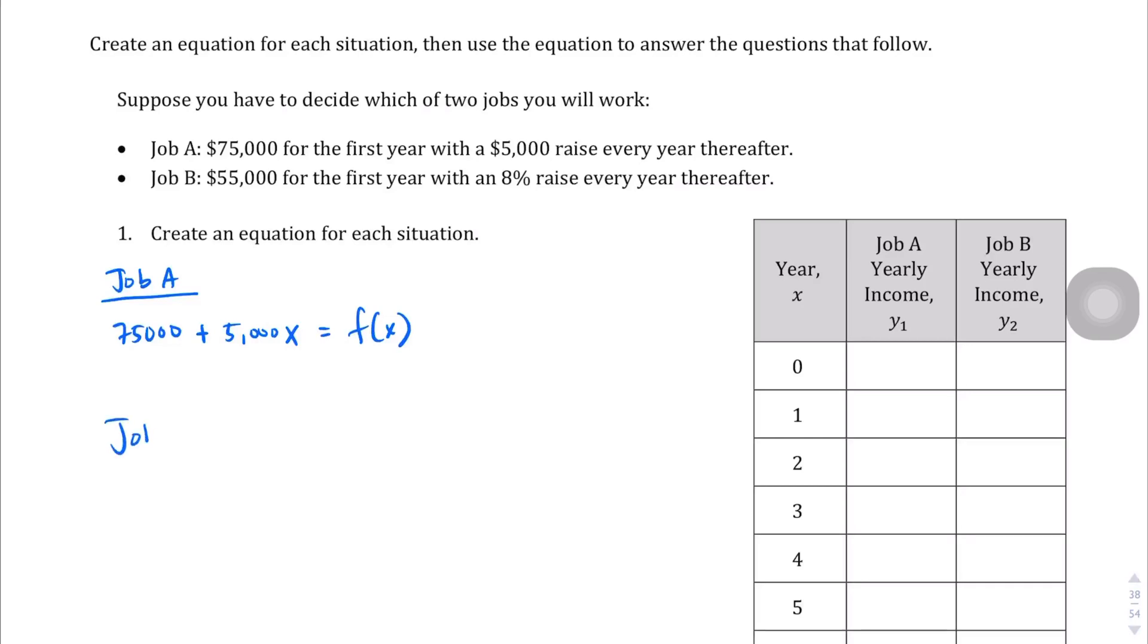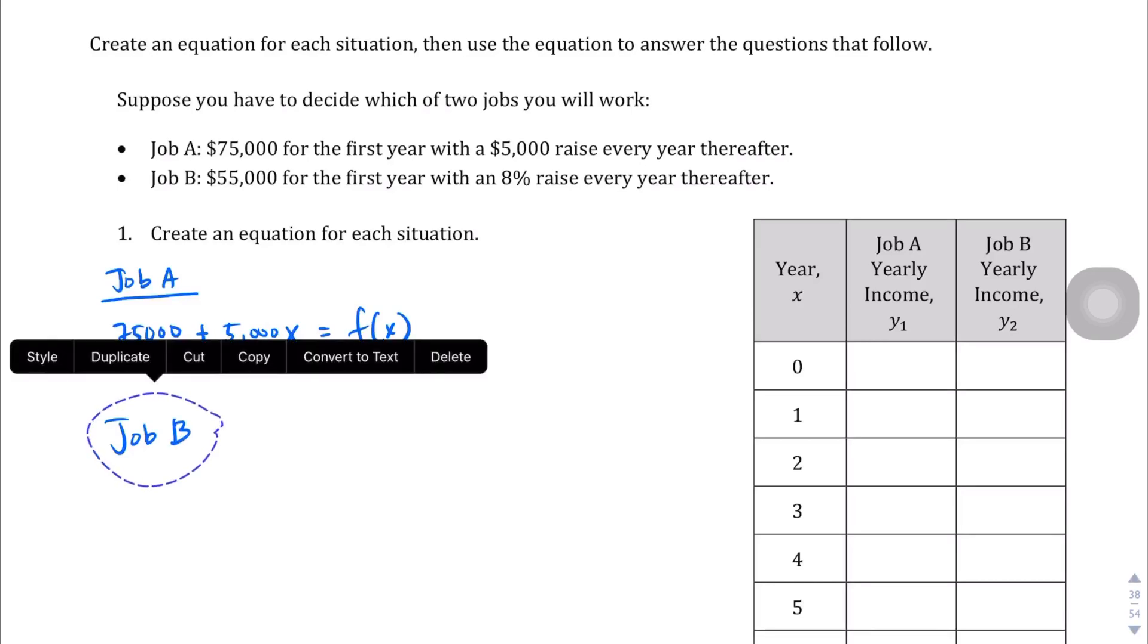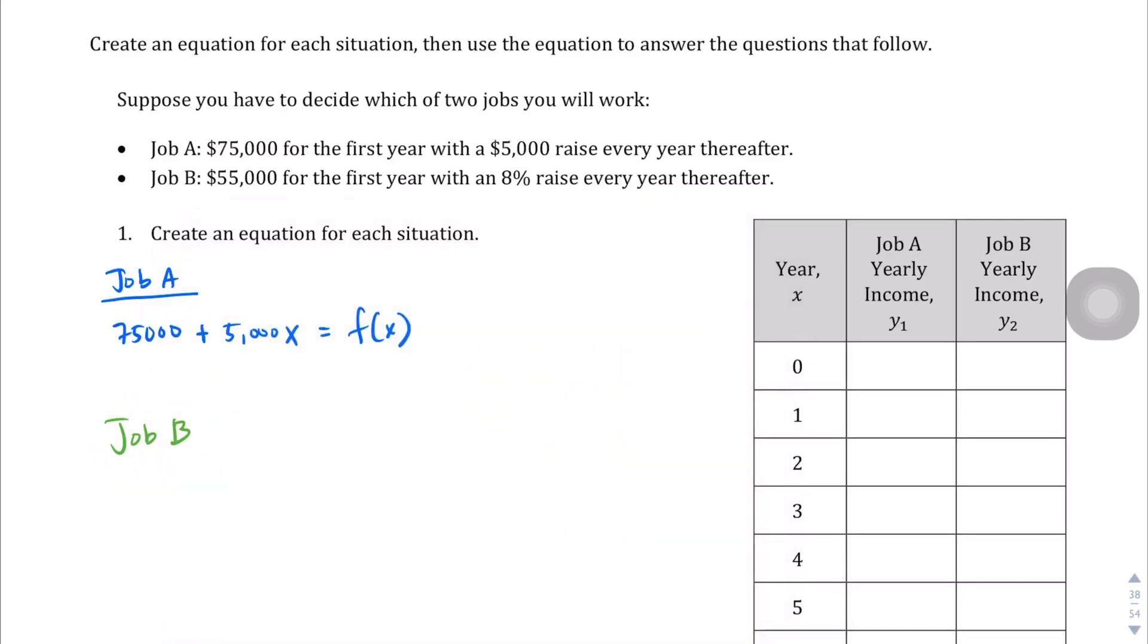Now job B is going to be paying $55,000. And you're getting an 8% raise every year thereafter. So the equation you're going to write is, not plus actually, it's going to be 55,000 times an 8% raise every year after that. And the way we show that as an equation, as evidenced by the example on the previous page, is 1.08 to the power of x, where x is the number of years that you'll be getting this 8% raise. So there is our function for job B.